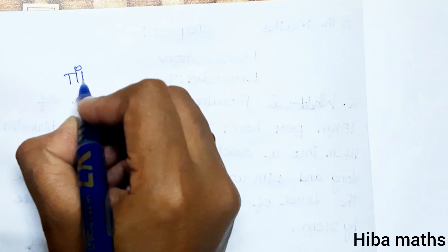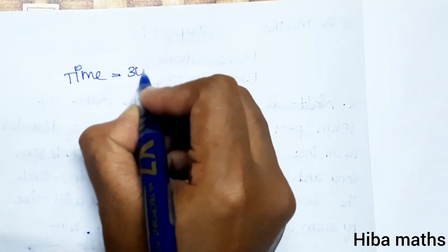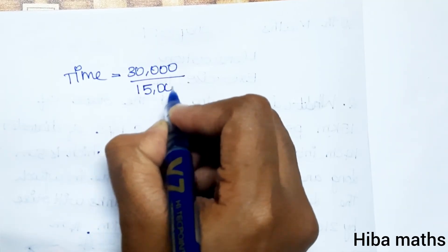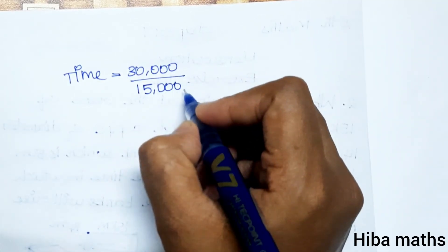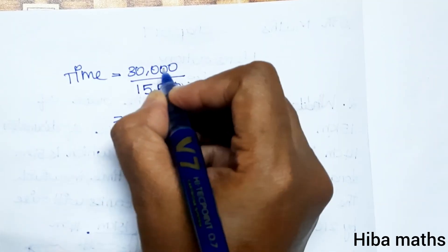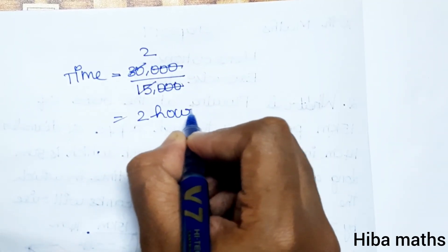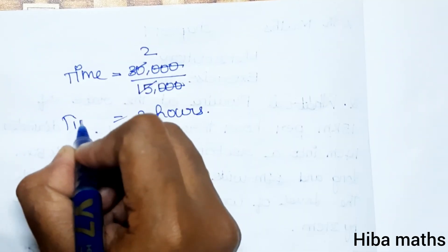Time: 30,000 divided by 15,000. 1 hour for 15 km means 15,000 meter. 30,000 divided by 15,000 equals 2. So 2 hours.